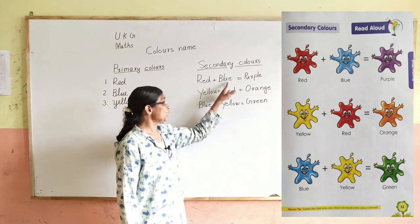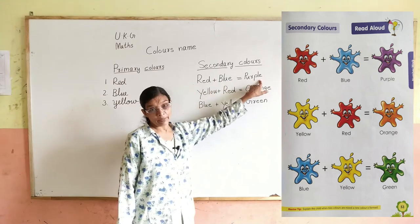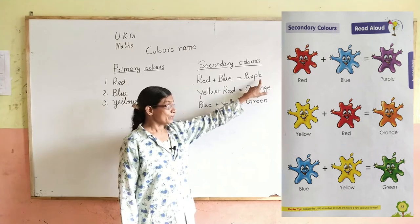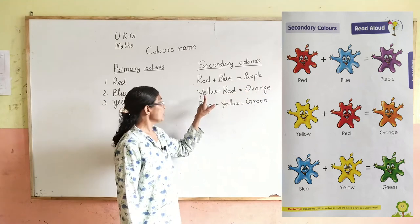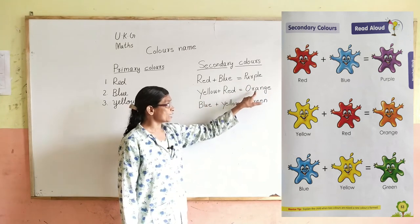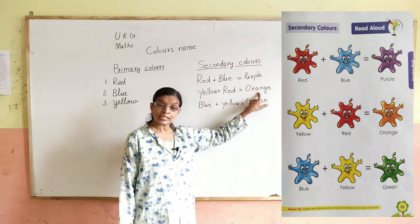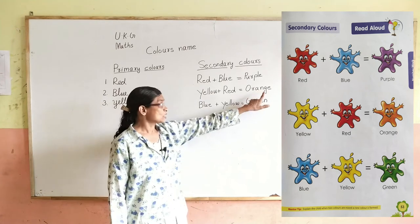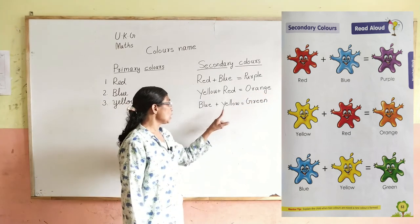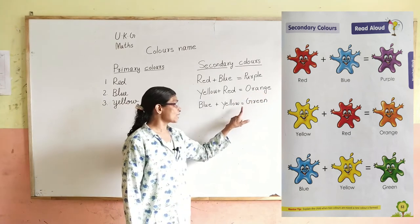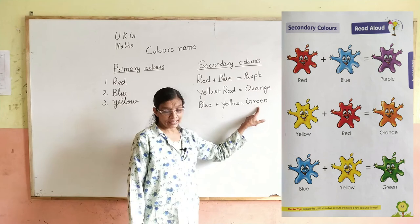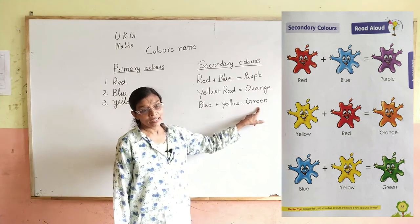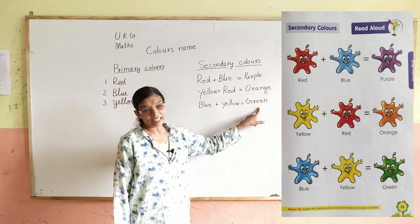Do you understand? Red and blue — we mix to get purple. We mix yellow and red to get orange. We mix blue and yellow to get green. Which color is it? It's a very nice color. See it all.